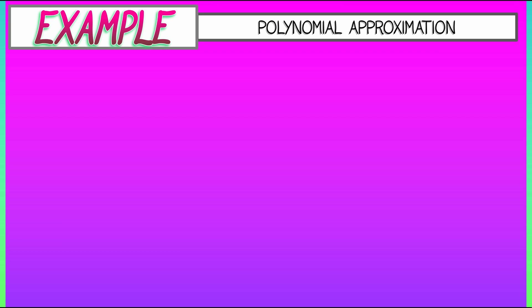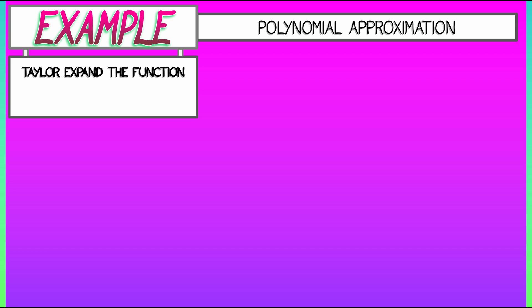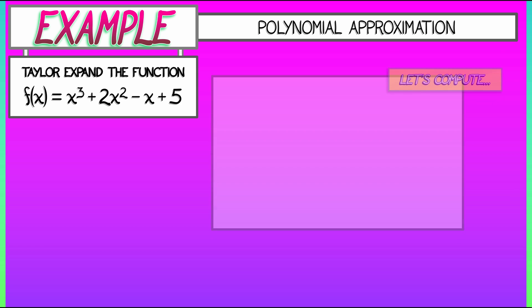Now, in light of that, let's consider the following somewhat weird example. What happens when we Taylor expand the function f of x equals x cubed plus 2x squared minus x plus 5? Well, we have to compute derivatives.